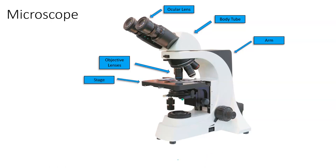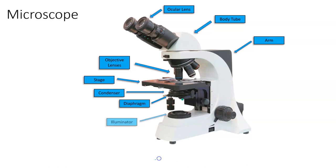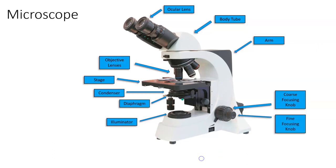You have the stage, which is where the sample, slide, and cover slide will sit. You also have the condenser, which is the piece of equipment that condenses and focuses the light on your image. You have the diaphragm, which controls how much light goes through the condenser. You have the illuminator, which is the light source — all of the illuminators in our laboratory microscopes are LED. You have the coarse adjustment knob and the fine focusing knob, and then, of course, the base.